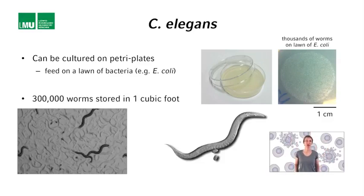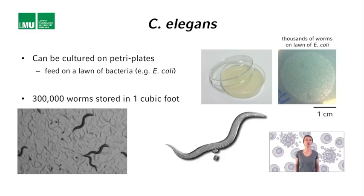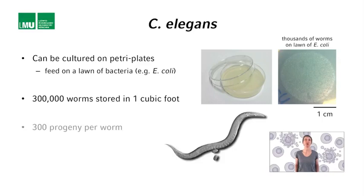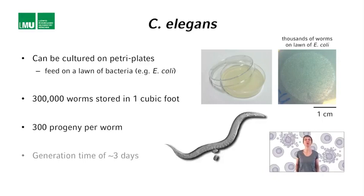Imagine how much space you would need to keep 300,000 mice or 300,000 humans. C. elegans has lots of progeny — about 300 for each worm — and they reproduce fast, with a generation time of about three days.